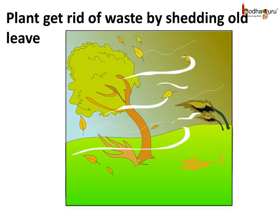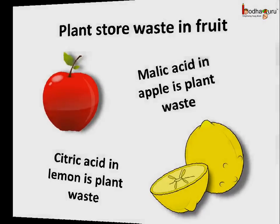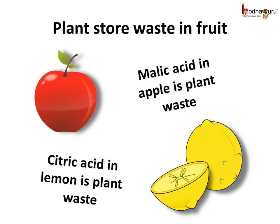Plants store many wastes in the leaves, fruits, etc. Hence, plants shed leaves to get rid of these wastes. The fruits fall down from the trees once ripe. The malic acid in the apple, citric acid present in the lemon, and tartaric acid in the tamarind are actually the wastes of the plant.